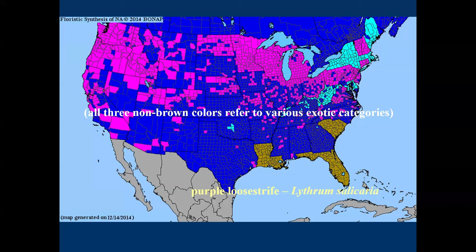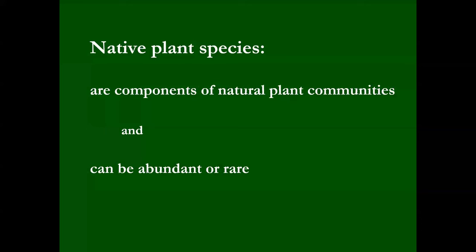If you see colors like blue, purple, or blue-green associated with a species on BoNAP — for example purple loosestrife — it's not native to anywhere in North America. Those colors mean it's not native to those counties. That resolves what's native and what's not.